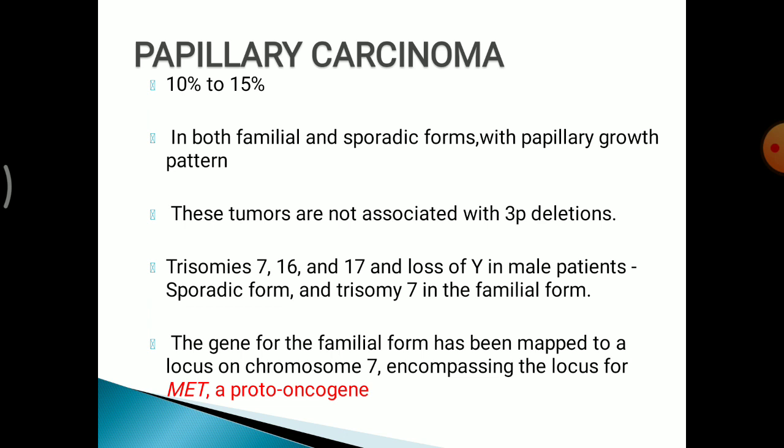Papillary carcinoma comprises 10–15% in both familial and sporadic forms. The characteristic feature is a papillary growth pattern and these tumours are not associated with 3p deletions. Rather, there are trisomies 7, 16 and 17 with loss of Y in male patients in the sporadic form, and trisomy 7 in the familial form. The gene for the familial form has been mapped to chromosome 7, the locus for MET, a proto-oncogene.